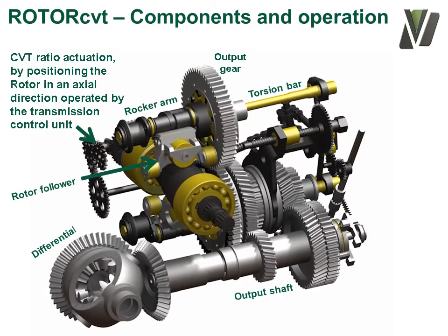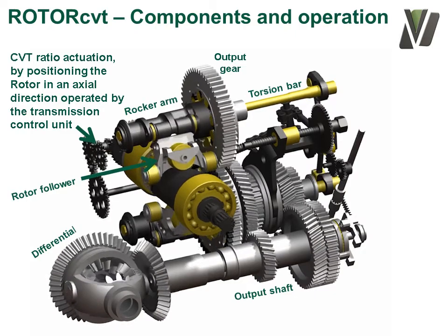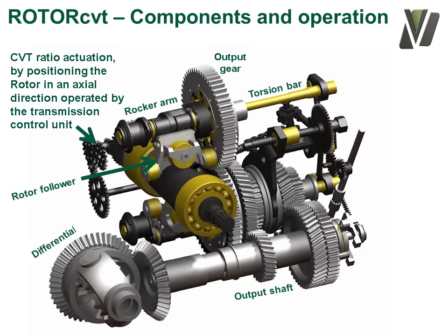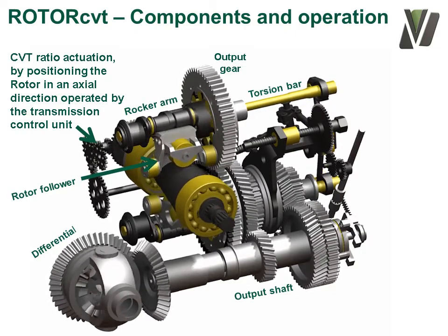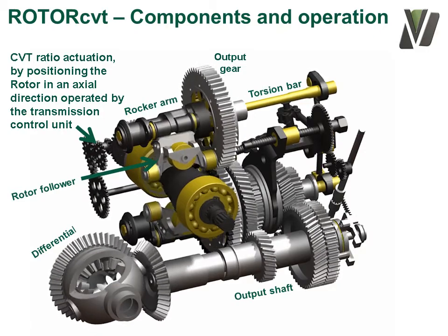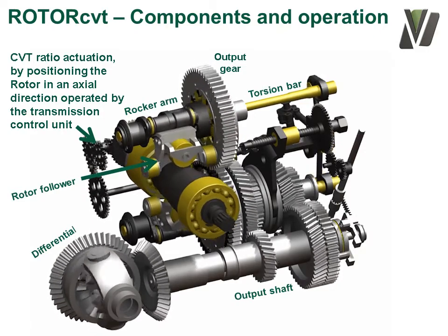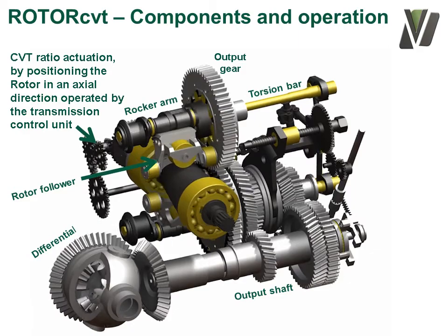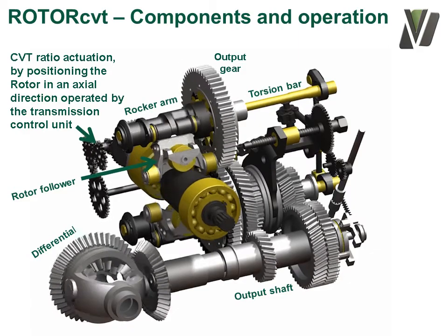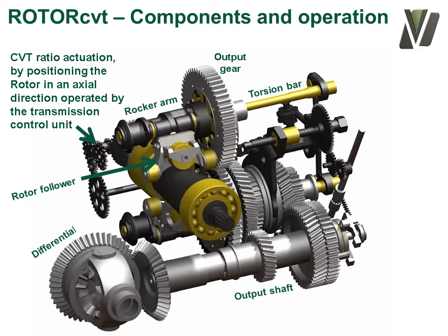The further the rotor is moved towards the viewer, the more the amplitude of oscillation of the rocker arms increases and the faster the vehicle moves. The rotor has now come nearest to the viewer, where the rotor follower bearings are at the edge of the rotor.